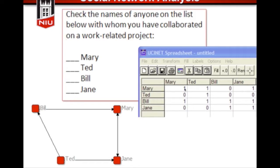The program I use is called UCINet. There are a number of programs out there — I use UCINet because it's good for the scale of projects I do and it's very reasonably priced. Within UCINet there's a program called NetDraw, and NetDraw takes the matrices and draws the diagrams for you. So what you have is the paper survey question, the matrix that resulted from that survey, and then the visual rendering of the network. You can see that Mary and Jane are connected to each other — they selected each other as a collaborative contact — and Bill chose Mary but Mary didn't choose Bill.